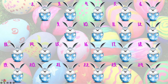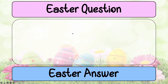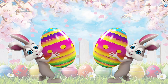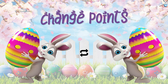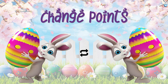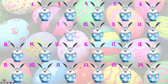Let's choose question number nine. Same again — question and answer. This time we've got the 'change points' slide. It's quite a simple game, nothing too fancy. Click on the background to go to the points counter, put in whatever points you want — 50 points, 100 points, one point — then click on the rabbit with the egg to go back to the main question slide.